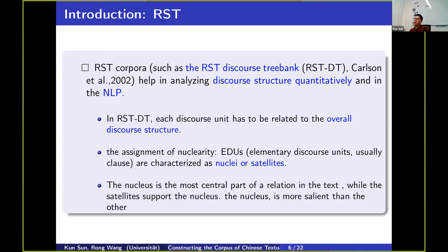There are three features in the RST discourse treebank. First, each discourse unit is related to the overall discourse construction, forming a discourse tree, so it focuses on global coherence. For each discourse relation, there are two statuses: satellite and nucleus. Nucleus is the more central part of the relation in the text, while satellites are less important. All such relations form the constituents and then form a tree.